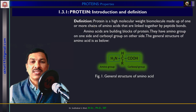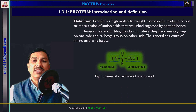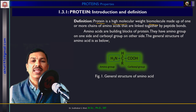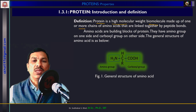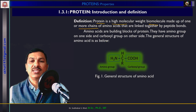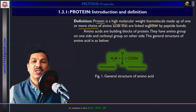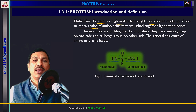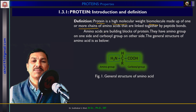The definition is that proteins are high molecular weight biomolecules. They are made up of one or more chains of amino acids which are linked together by a peptide bond. Proteins are formed either by a single chain of amino acids or many chains of amino acids.